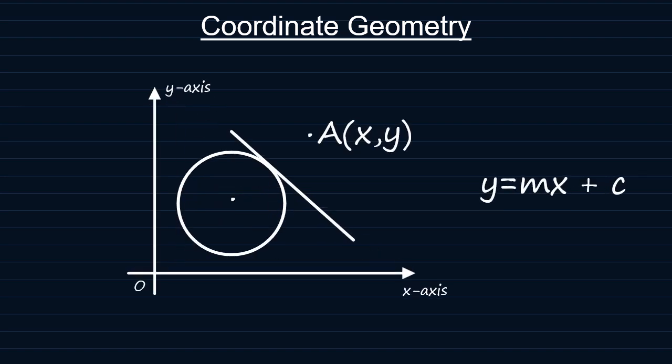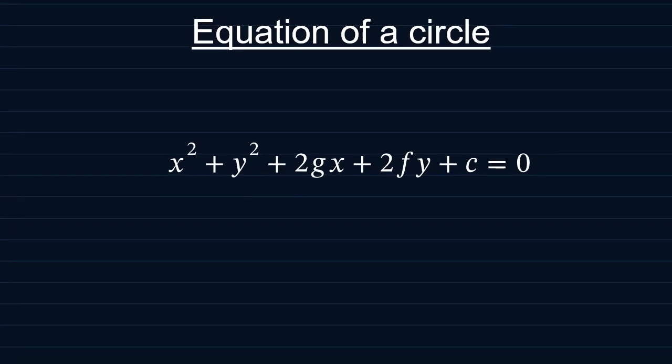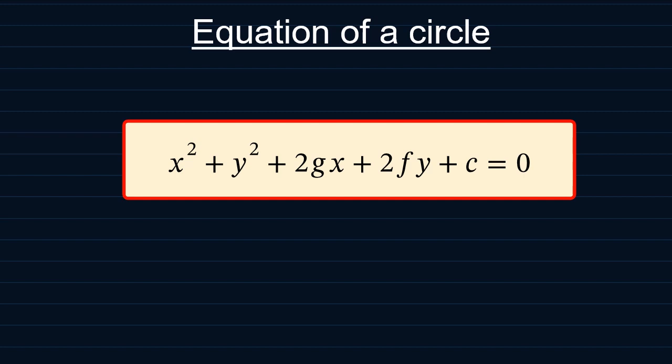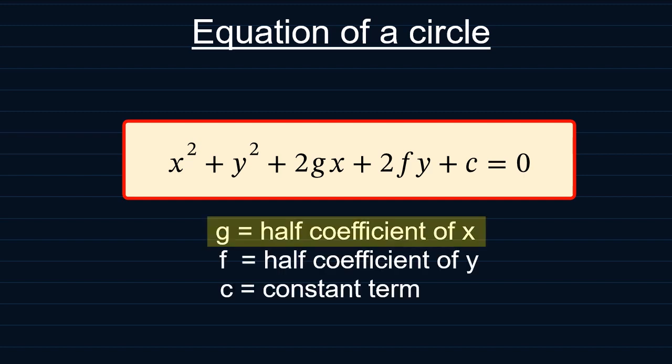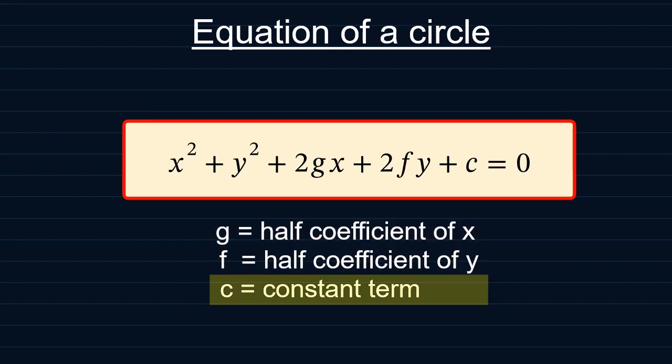We can express the equation of a circle in the form x squared plus y squared plus 2gx plus 2fy plus c is equal to 0. We call this the expanded form of the equation of a circle. In this case, g is half of the coefficient of x, f is half of the coefficient of y, and c is the constant term.